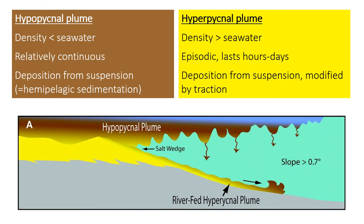Another key aspect of deltas is that the river water can push offshore, especially during floods, causing unidirectional flow in the marine delta front environment. These plumes of water are categorized by their density: hypopycnal plumes have a density less than seawater, and hyperpycnal plumes have a density greater than seawater. Because seawater is salty and river water is fresh, normal river flow — if it contains not a lot of sediment — is hypopycnal and spreads out along the water's surface. As it spreads, friction with the ocean water causes it to lose energy and gradually deposit sediment from suspension, leading to a fairly continuous rain of hemipelagic sediment.